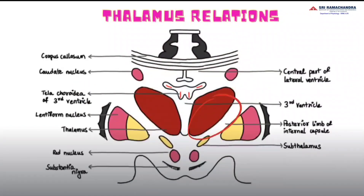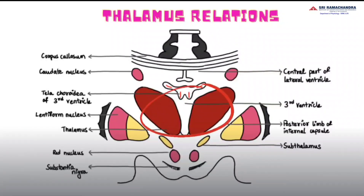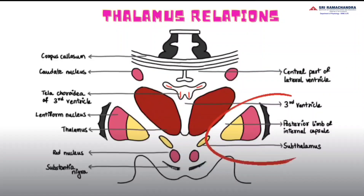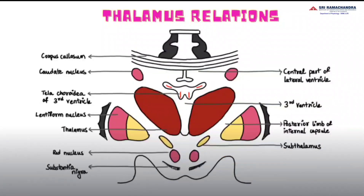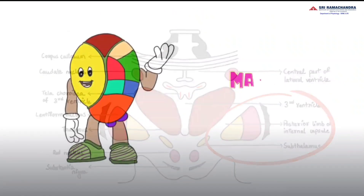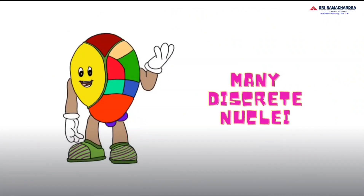Postero-inferiorly, it is related to the ventrolateral part of the thalamus. Medially, it forms the lateral wall of the third ventricle. And laterally, it is related to the posterior limb of the internal capsule. Thalamic nuclei are composed of a number of discrete nuclei.